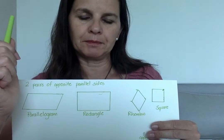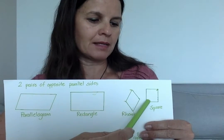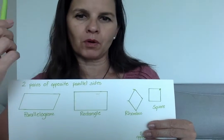And then we have a square. And a square, just like the rectangle, has right angles in all four corners.